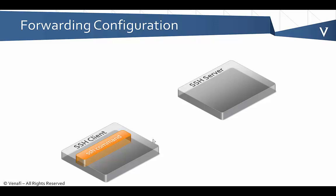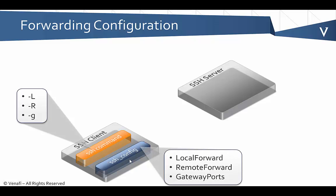Looking at how to configure this: I've got my SSH command with the options I've shown to enable port forwarding. In addition, I can use my SSH config file — the client configuration — with options like LocalForward, RemoteForward, and GatewayPorts. These are good to know about. But if you're an SSH administrator, you really want to look at limiting port forwarding, because frankly it's a very dangerous thing.